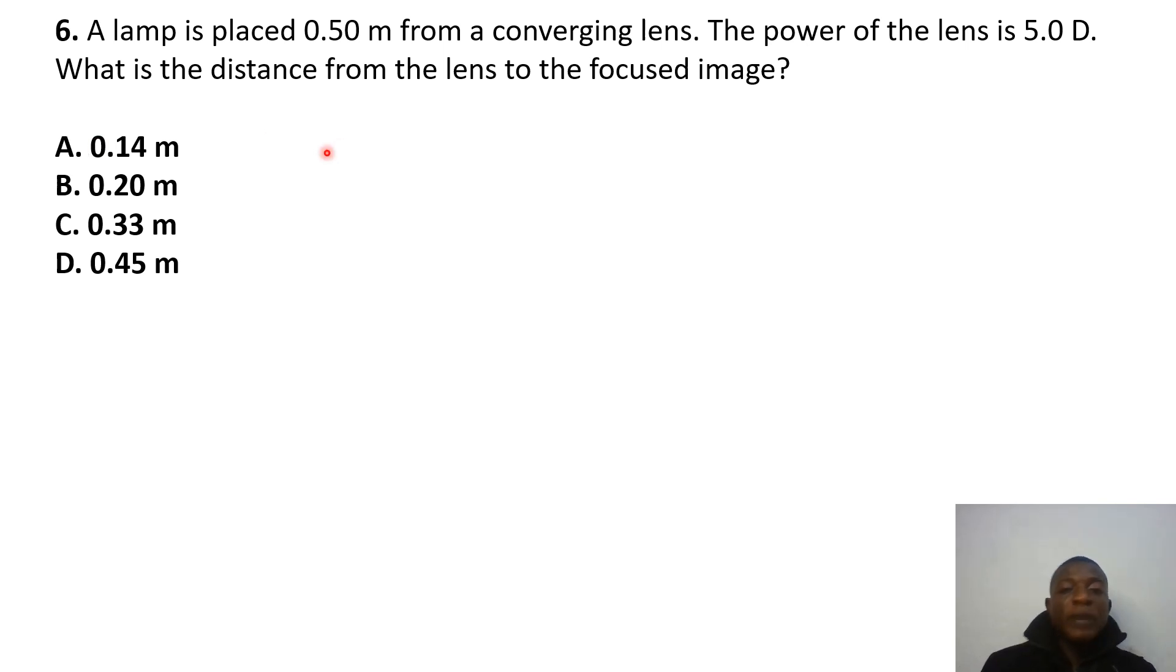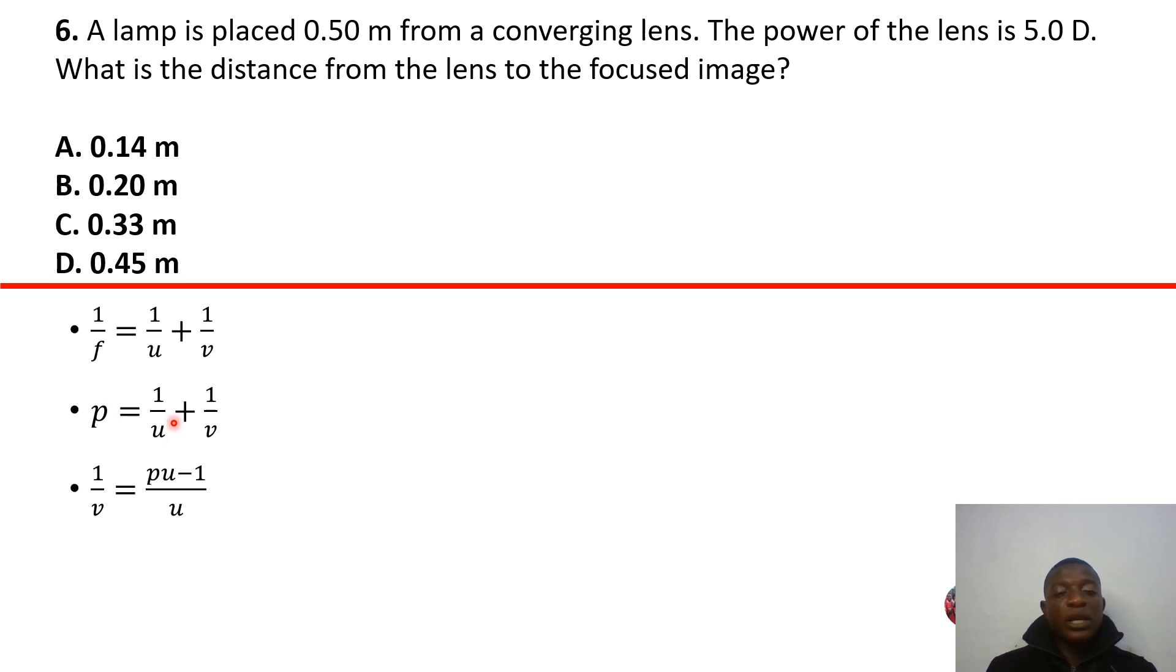Question 6: A lamp is placed 0.5 meters from a converging lens. That's the object distance, 0.5 meters. The power of the lens is 5.0 diopters. What is the distance from the lens to the focused image? So they are just asking for image distance to the converging lens. So you realize that the equation is 1 over f equals 1 over u plus 1 over v. So, of course, 1 over f there, the reciprocal of the focal length of the lens gives you the power of the lens. So if we put in that expression, we're looking for v. So I can just make 1 over v the subject by carrying 1 over u the other way.